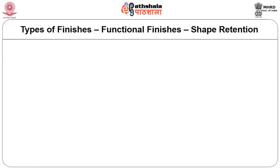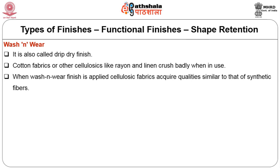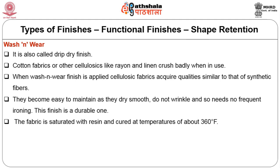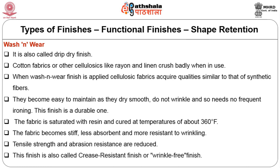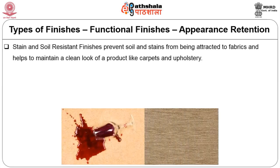Wash and wear finish, also called drip dry finish: cotton fabrics or other cellulosics like rayon and linen crush badly when in use. When wash and wear finish is applied, cellulosic fabrics acquire qualities similar to synthetic fibers — they become easy to maintain, dry smooth, do not wrinkle and need no frequent ironing. This is a durable finish. The fabric is saturated with resin and cured at about 360 degrees Fahrenheit. The fabric becomes stiff, less absorbent and more resistant to wrinkling; tensile strength and abrasion resistance are reduced. This finish is also called crease resistant or wrinkle free finish.